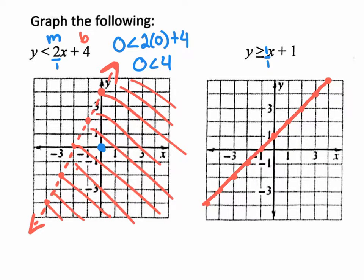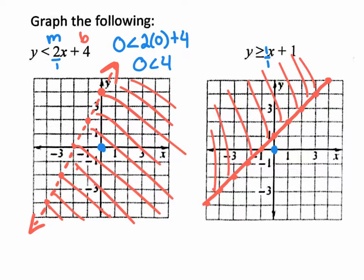Now I need to shade. Instead of testing (0, 0) — though that's a better way to really understand your answers — the shortcut is: what symbol do we have? Greater than or equal to. Greater than is above, so you shade in above. The shortcut always works as long as you know how to read your inequality. Let's go over the homework with this new shortcut method.